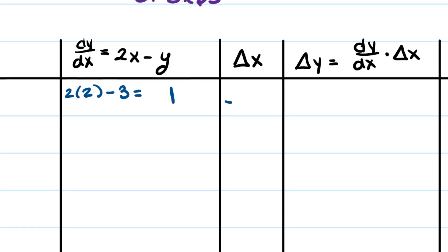Delta x is negative 0.1, and then dy/dx is going to be 1. So dy/dx times delta x is 1 times negative 0.1, so we get negative 0.1.